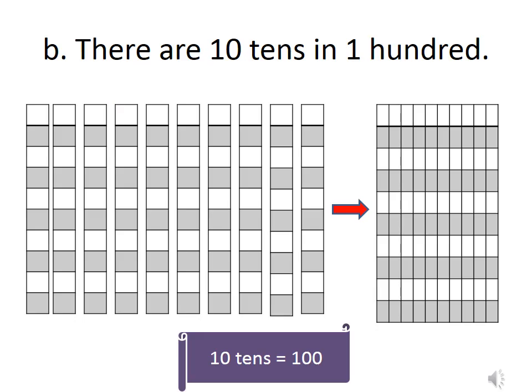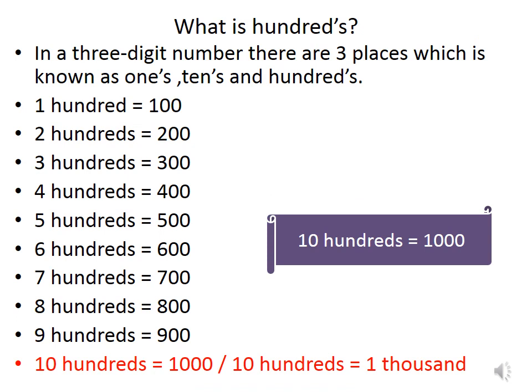See, over here, I have taken 10 lines but as soon as we combine it together, it becomes 100. 1 hundred. Similarly, what is 100's? In a 3 digit number, there are 3 places which is known as 1's, 10's and 100's.